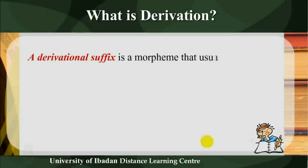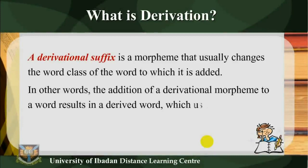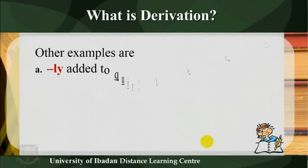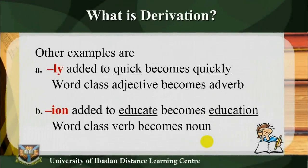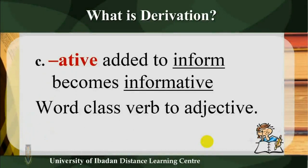A derivational suffix is a morpheme that usually changes the word class of the word to which it is added. In other words, the addition of a derivational morpheme to a word results in a derived word which usually belongs to another word class. Other examples: -ly added to 'quick' becomes 'quickly' (adjective → adverb); -ion added to 'educate' becomes 'education' (verb → noun); -ive added to 'inform' becomes 'informative' (verb → adjective).